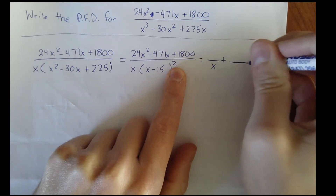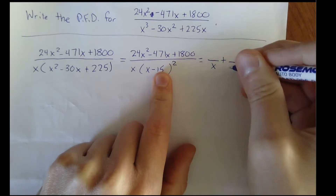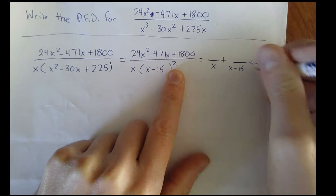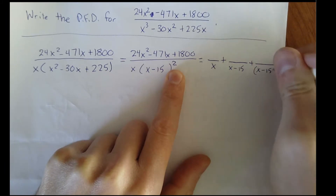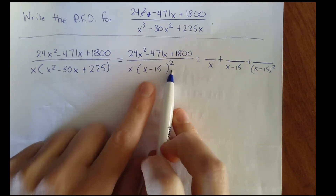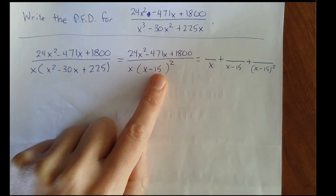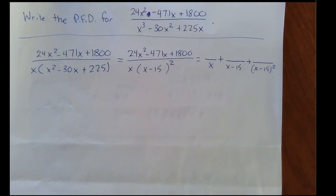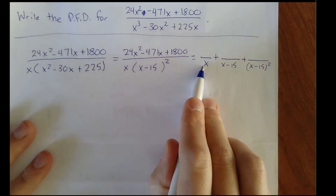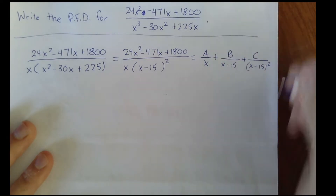Since the repeated factor has an exponent of two, it will give us two partial fractions: one where that factor is raised to the first power, and another where the factor is squared. If it were cubed, we'd have three partial fractions — x minus 15 to the first, x minus 15 squared, and x minus 15 cubed. Since all factors are linear, the numerators will just be constants: A, B, and C.